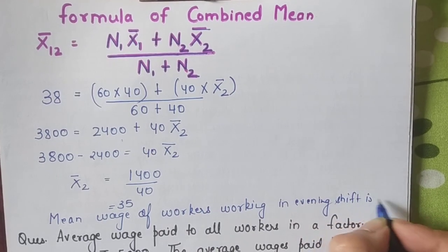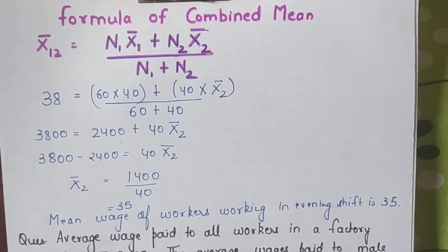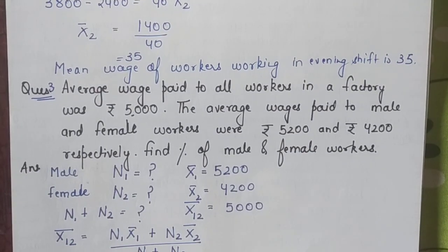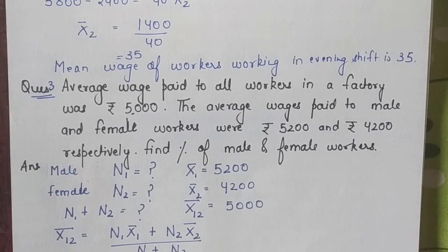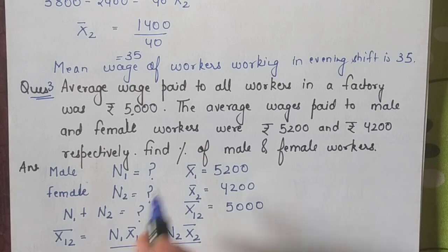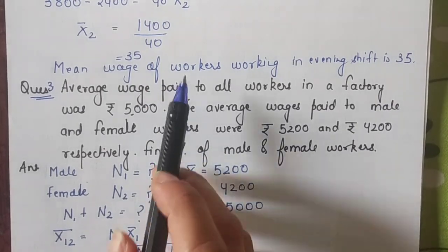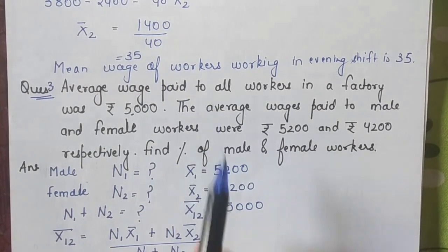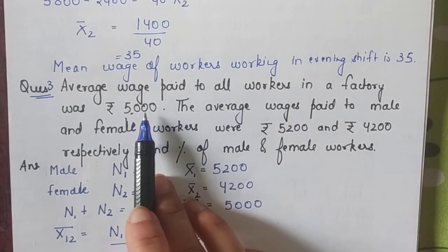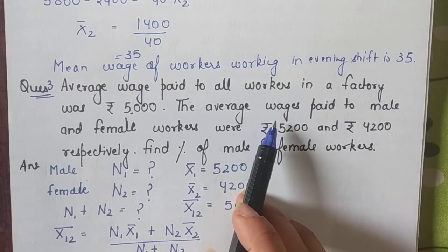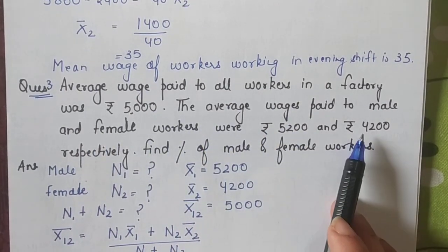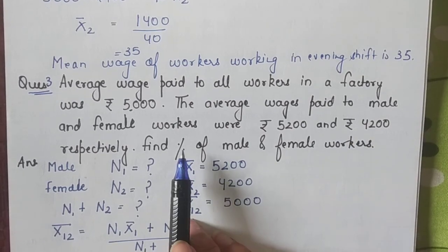Now yet another question. Let's do it. This is the third question. Average wage paid to all the workers in a factory was 5000. This is a bit different, so do not skip it. This is not the same as the second question.